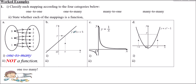Mapping B is y = 2x + 5. Each one element of x goes to exactly one y. This is a one-to-one mapping, and it is a function.